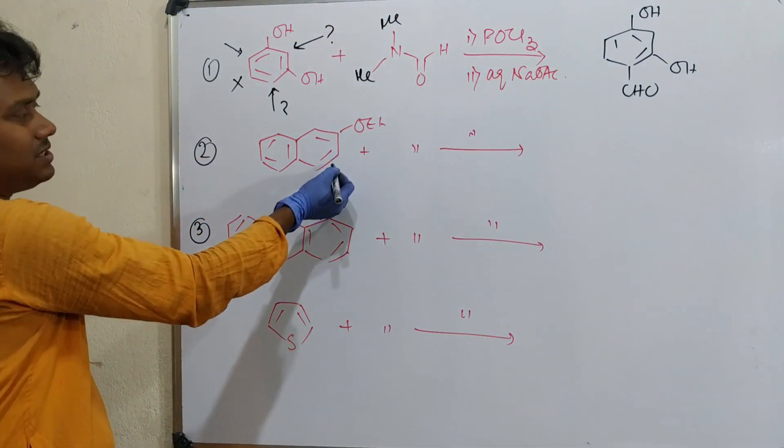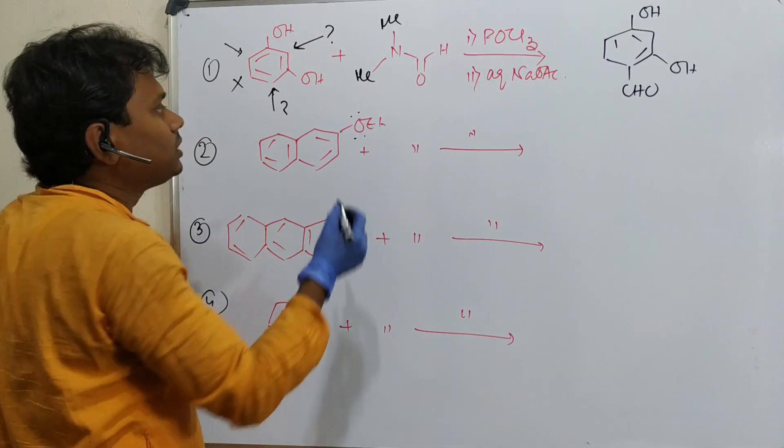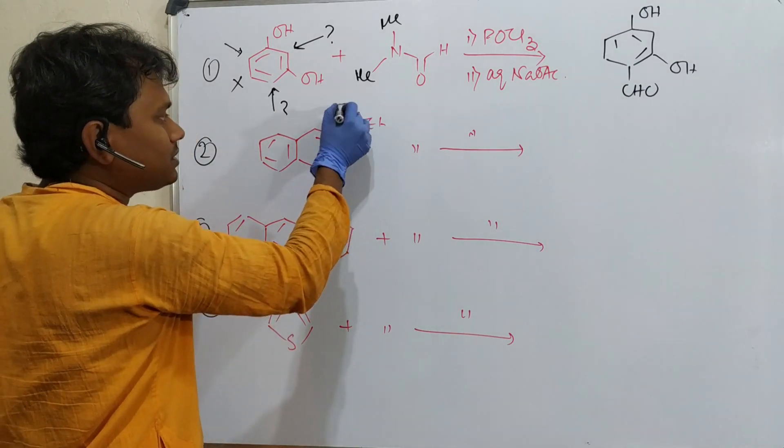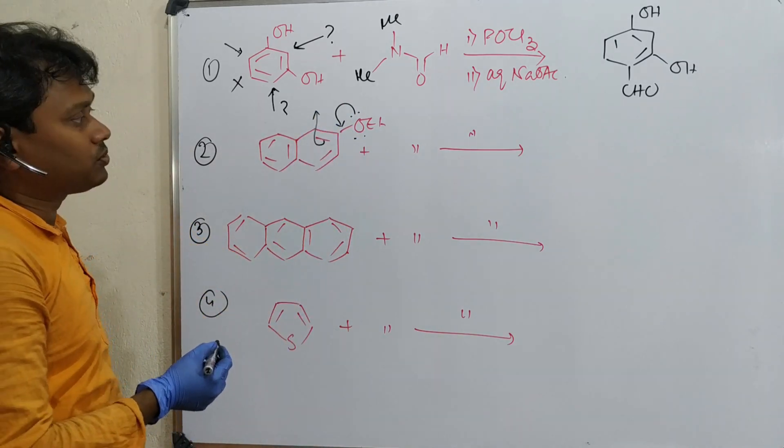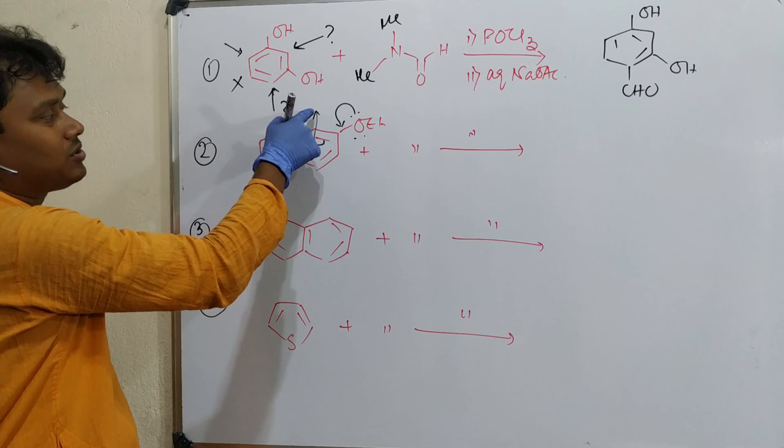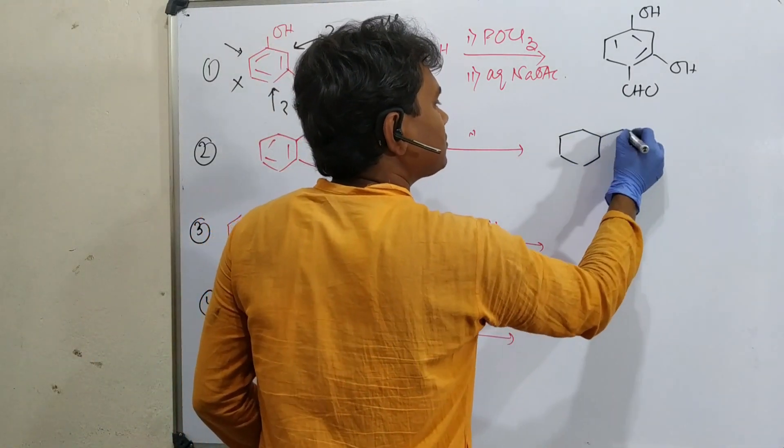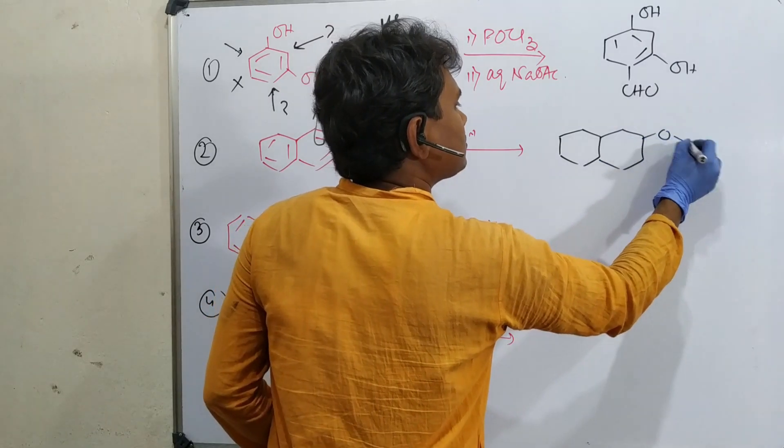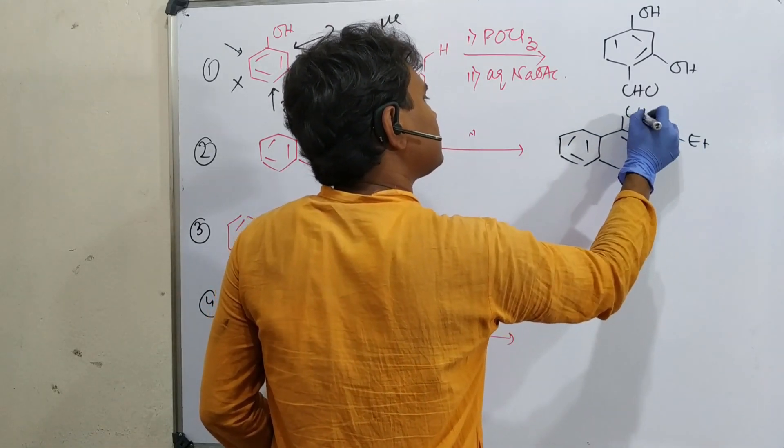Second, this is naphthol with OH. We attach either here or here. Oxygen makes this position electron-rich. That's why this reaction will happen at this position adjacent to OH, resulting in this aldehyde product.